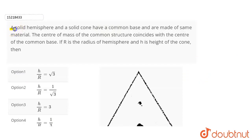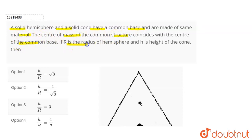In this question we have given that a solid hemisphere and a solid cone have a common base and are made of the same material. The center of mass of the combined structure coincides with the center of the common base. If r is the radius of the hemisphere and h is the height of the cone, find the relation.